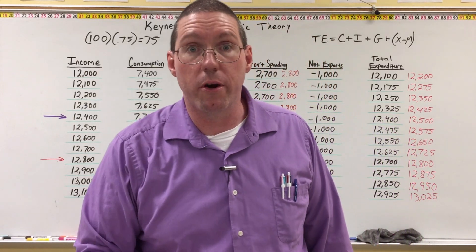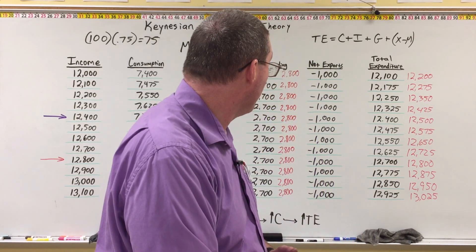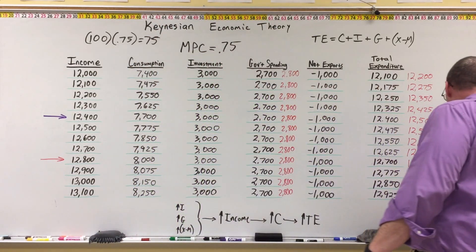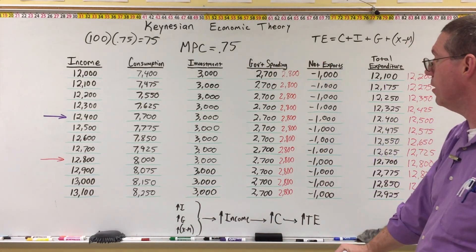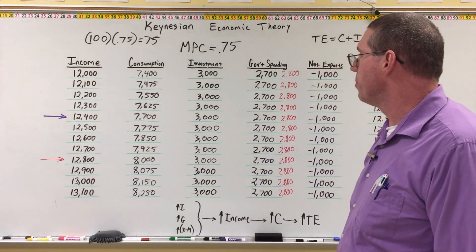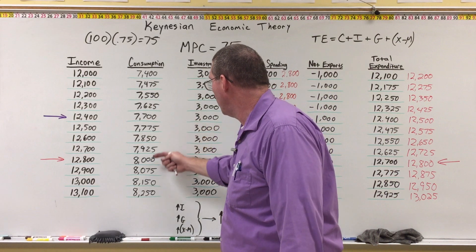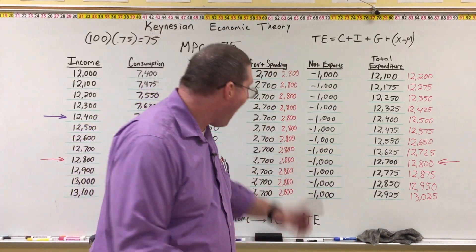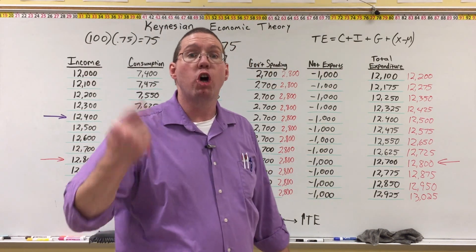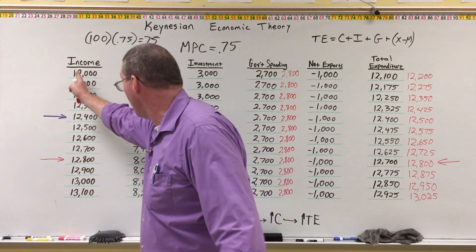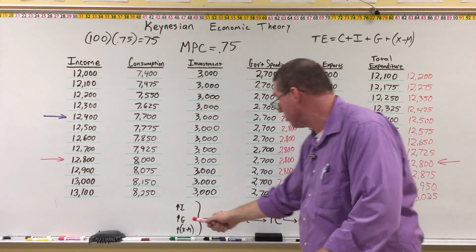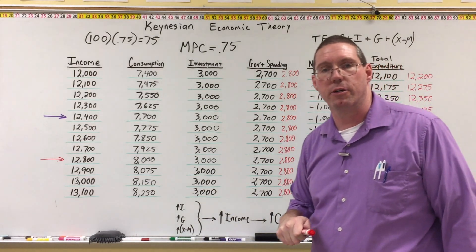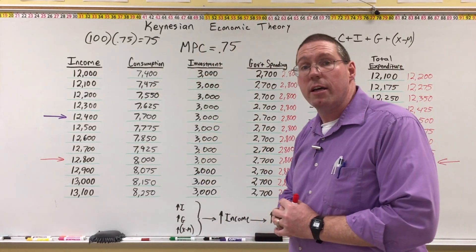Look back at the assumptions — one of the five assumptions Keynes made was that consumption drives the economy. We can see that as evidence here in the fact that a $100 increase in government spending ultimately resulted in a $400 increase in equilibrium real GDP. In the next set of videos, I'm going to help you understand how this $100 increase in government spending caused such a large increase in income that resulted in an increase in consumption. Increase in government spending caused an increase in income, which caused an increase in consumption, which caused an even bigger increase in total expenditure. That is our introduction — the beginning of our understanding of Keynesian economic theory.